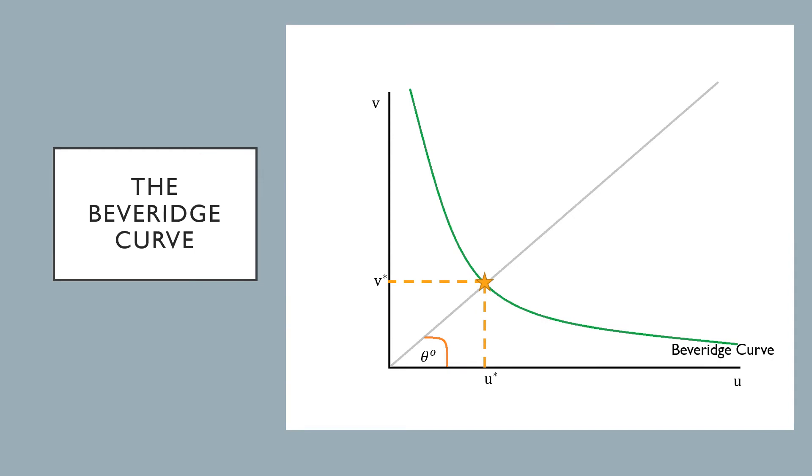This next one is our Beveridge curve. Now the Beveridge curve is just a relationship between vacancies and unemployment.